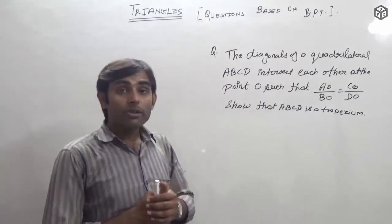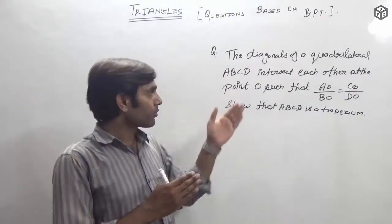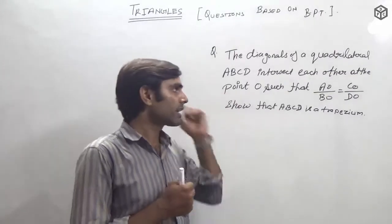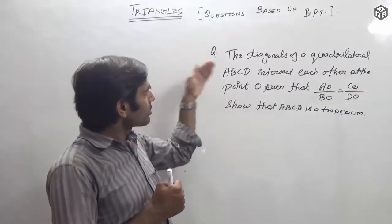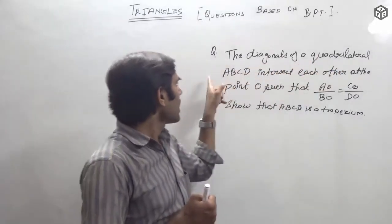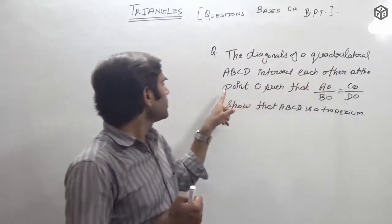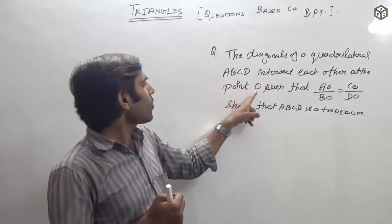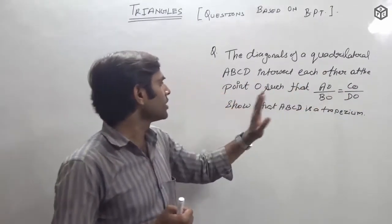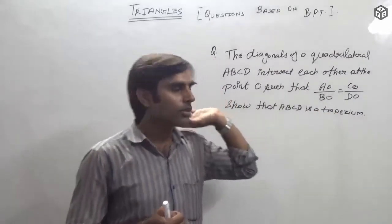In the first question, you have given that the diagonals of a quadrilateral ABCD intersect each other at O, such that AO upon BO is equal to CO upon DO. We have to show that ABCD is a trapezium.